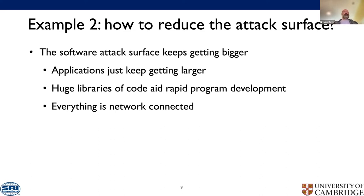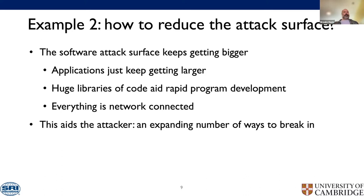Another general problem: the software attack surface just keeps getting bigger because applications are larger and more complicated, they're using huge libraries to aid rapid development, they're using multiple programming languages, and of course everything's networked. Your browser is a distributed system. This aids the attacker — a JavaScript virtual machine allows you to write code to attack the software and break things like address space layout randomization.